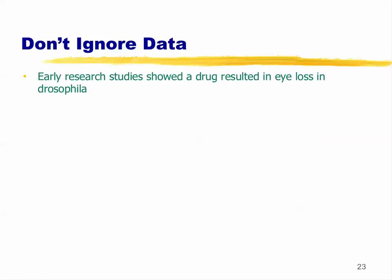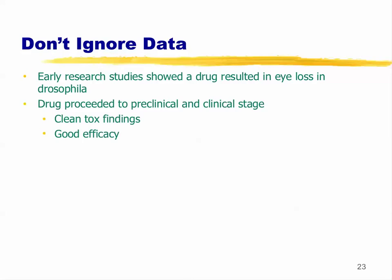Here's a real example from a big pharma. They were using a Drosophila model and saw eye loss, which they basically ignored since it was just in flies. They proceeded through preclinical and clinical studies. But in patients, they started seeing blindness. Going back, they realized the Drosophila data had actually signaled an impact on the eye. The program died. Don't ignore data — even early, seemingly irrelevant signals. If there is a toxicity, really understand what it means and follow up.